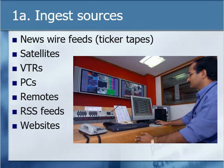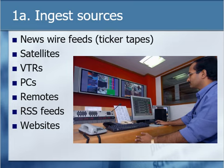Ingest sources include news wires, feeds, and ticker tapes — examples being Associated Press, Canadian Press, and Reuters. Companies like newspapers and journalists put their stories on these wire services to share across the world, receiving a kickback each time someone uses them. Other sources include satellite feeds, videotape recorders, PCs, and remotes. RSS feeds — Really Simple Syndication — are a content distribution method to stay up to date on websites and news.